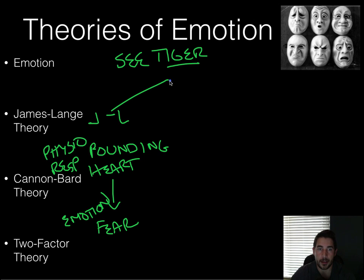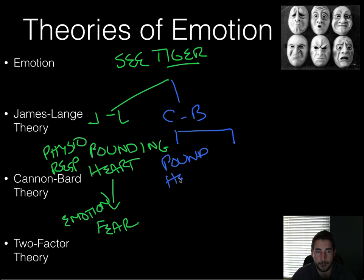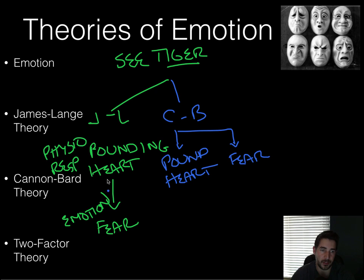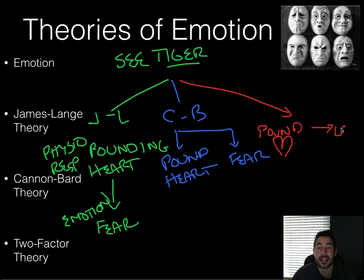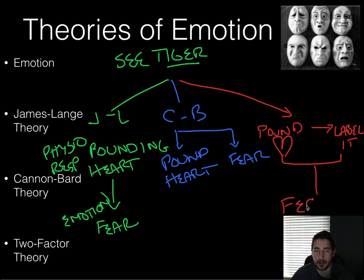In the Cannon-Bard theory, you see the tiger, your heart pounds and you have fear at the exact same time — those happen simultaneously. And finally, for the two-factor theory: you see the tiger, you have your pounding heart, you label it — 'I'm afraid, I'm fearful' — and then with those things put together, you experience fear.